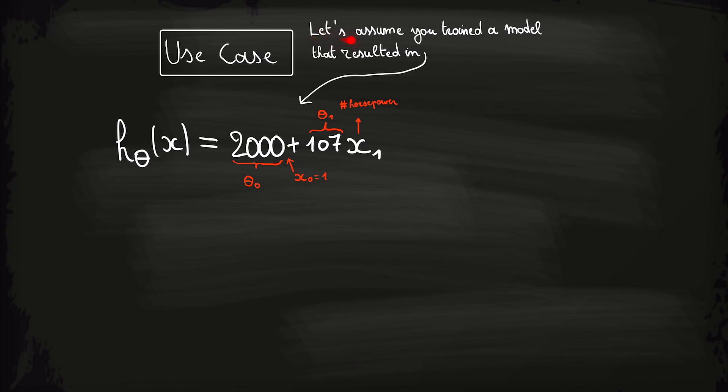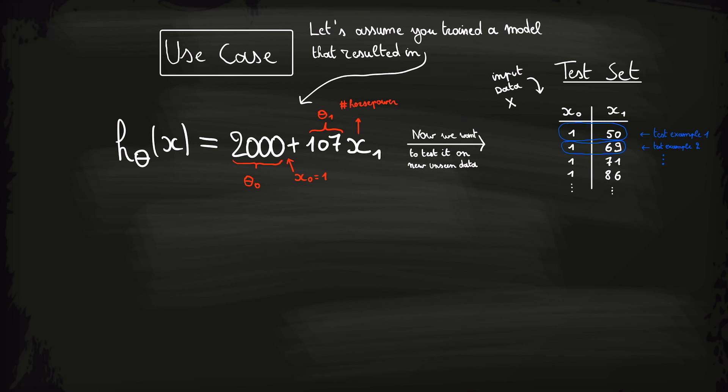Now you might be wondering why we would want to multiply a matrix with a vector in machine learning. Well let's look at it together. Let's assume you already trained a model that looks as follows, with theta 0 equal to 2000, theta 1 equal to 107, and x subscript 0 is always equal to 1 as we saw in the last video. Now that we got the trained model, we want to test it. We want to see how it performs on new unseen data and see if it can perform accurate predictions. So you might give it a test dataset that contains test examples.